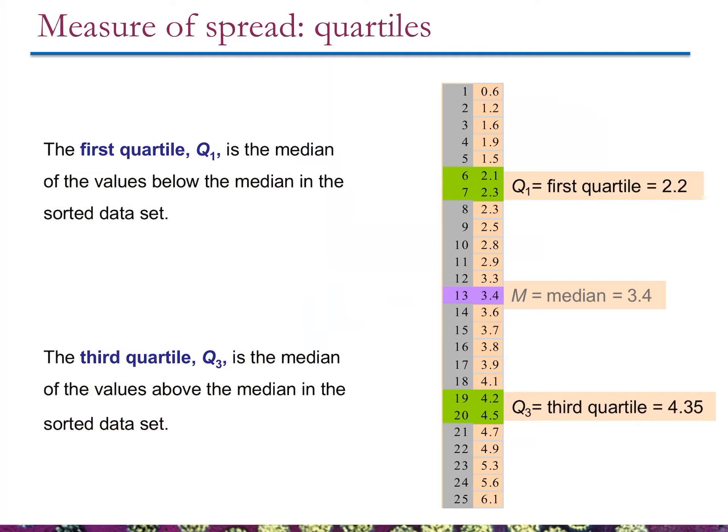Now let's talk about some measures of spread — variation around the mean, or how wide the x-axis is in a distribution or histogram. There's a very common way to do this called standard deviation, and we'll get to that in a bit. But first, let's talk about quartiles — a way to break a data set up into fourths, hence the term quartile. Quartile 1 is the median of the values below the median of the sorted data set.